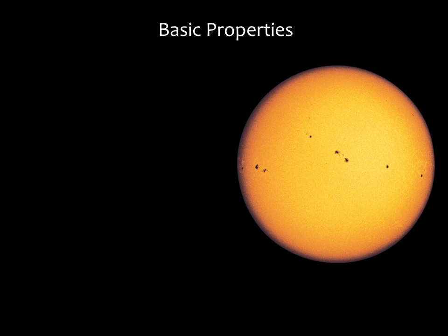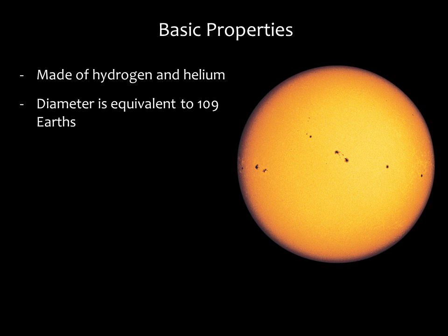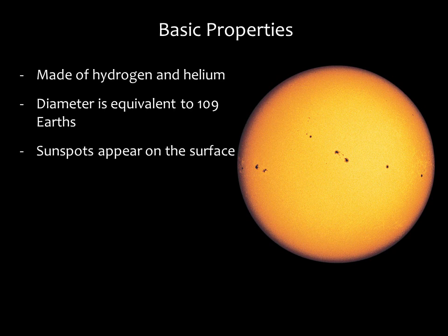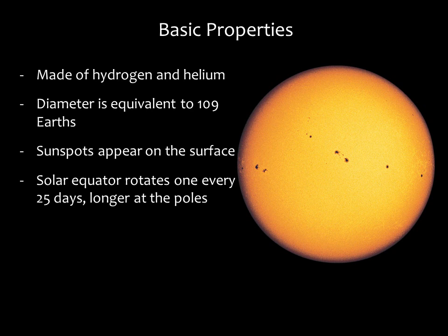Our sun is made up almost entirely of hydrogen and helium, and it is enormous — we could fit 109 Earths across its diameter. On the sun's surface are dark spots called sunspots. The sun is not a solid sphere; different parts of it rotate at different rates. The equator is fastest with a rotation period of about 25 days.